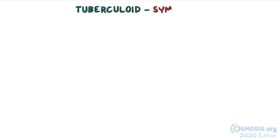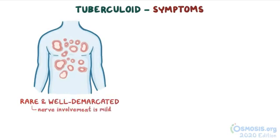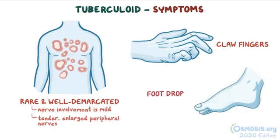With the tuberculoid form, on the other hand, there are hypopigmented or reddish patches on the skin, which are rare and well-demarcated, and nerve involvement is usually mild, but there can be tender, enlarged peripheral nerves. In late stages, there's weakness of the hands with claw fingers and foot drop, which is the inability to lift the front of the foot. On the bright side though, no fingers are falling off.